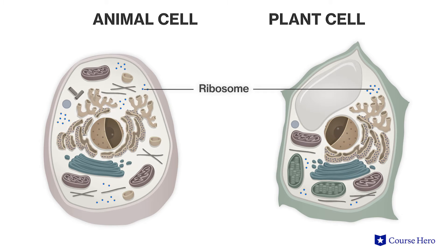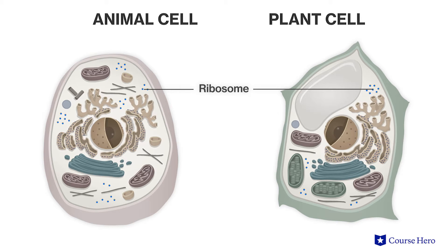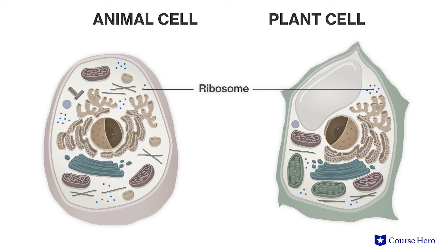Ribosomes are the protein factories of the cell, and in addition to being found in all eukaryotic cells, they are also present in prokaryotic cells. Ribosomes can be found suspended in the cytosol of the cell or bound to the endoplasmic reticulum, or ER for short.